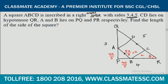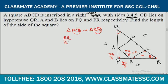Let angle R equal theta. Triangle RCB will be similar to the larger triangle PQR, with angles theta, 90, and 90 minus theta. So triangle R, C, B is similar to triangle R, P, Q. Therefore RB/RQ equals CB/PQ.